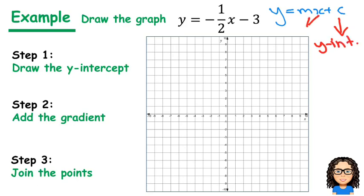And the value of m is your gradient. So the number by itself is the y-intercept. The number in front of x is the gradient. So in this case, we have a y-intercept of negative 3.